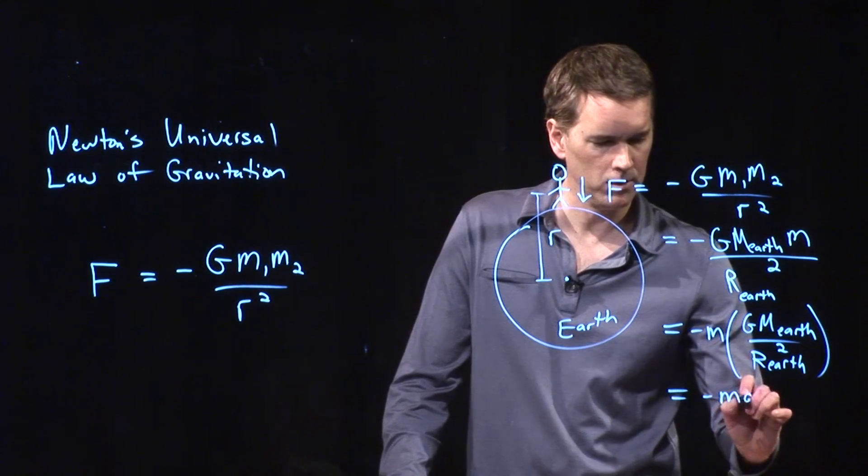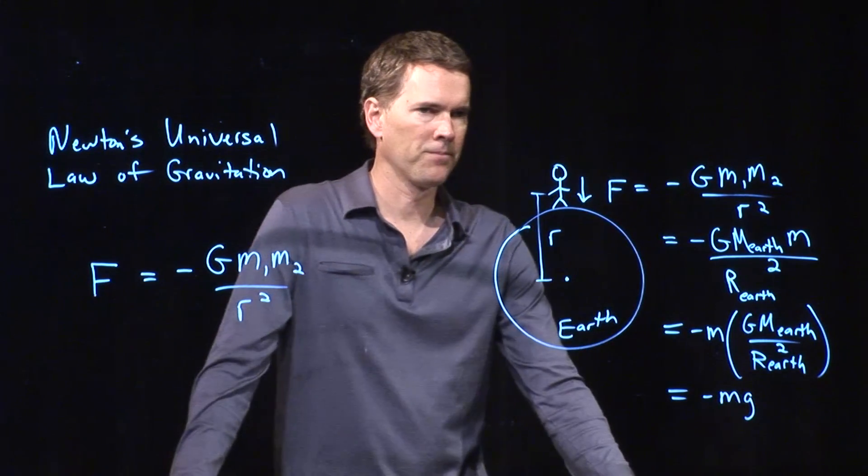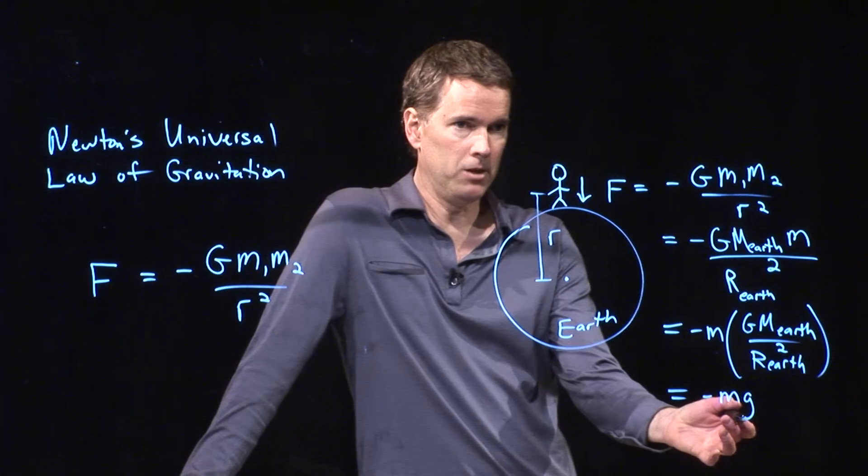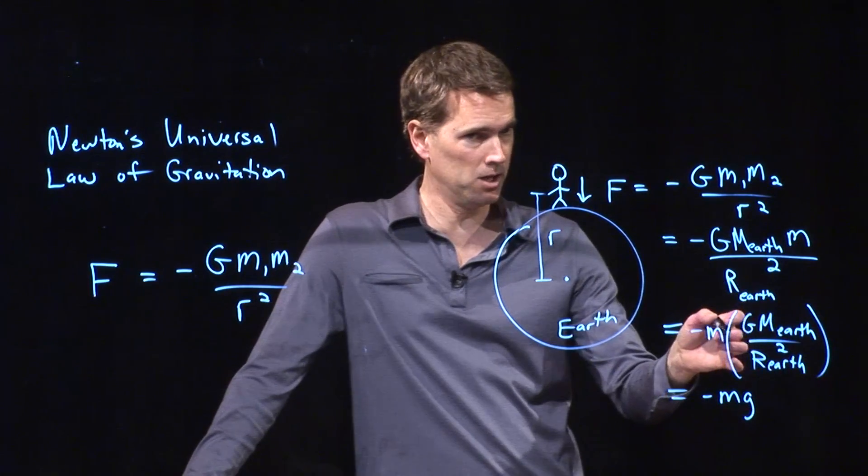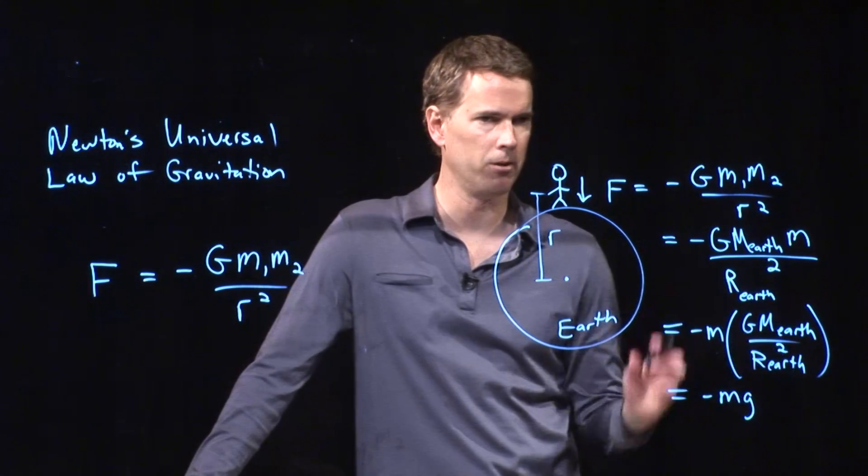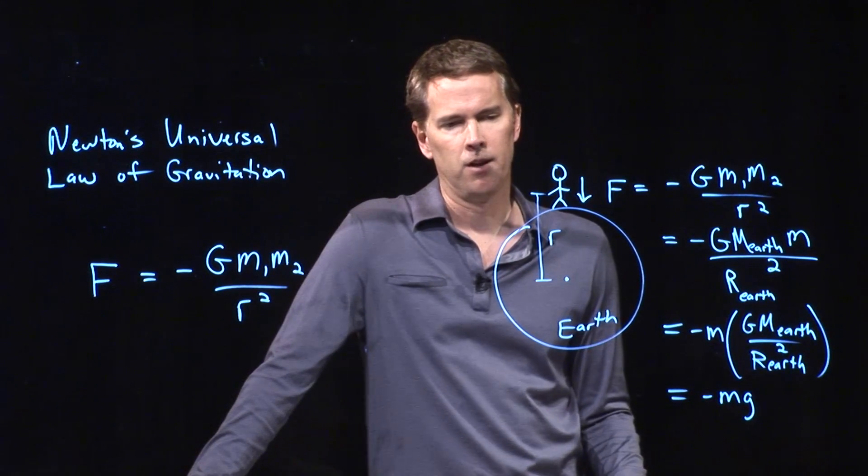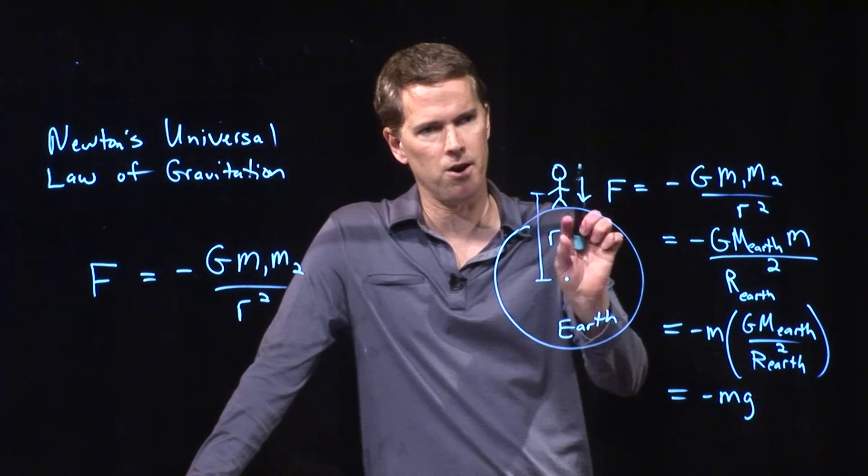9.8 meters per second squared. This is exactly equal to mg. Where did that 9.8 meters per second squared come from? It came from this stuff right here. It came from big G times the mass of the Earth divided by the Earth squared. But that was at a fixed r.